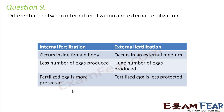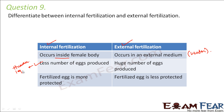Question number nine: differentiate between internal fertilization and external fertilization. Internal fertilization occurs inside the female body; external fertilization occurs in an external medium, such as water, in the case of aquatic animals. In internal fertilization, fewer eggs are produced — in humans, normally one egg is produced every 28 days. In external fertilization, a huge number of eggs are produced; in frogs, hundreds of eggs are produced.